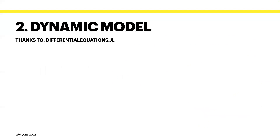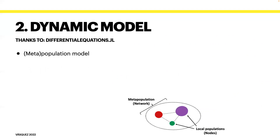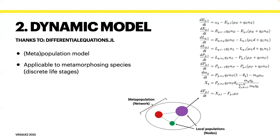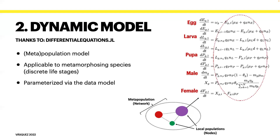Moving on to the second part of the framework, the dynamic model: this piece is a mathematical representation of continuous-time population dynamics using ODEs. It's a metapopulation model, meaning it can accommodate multiple discrete populations connected via bidirectional migration. The equations of the dynamic model are applicable across metamorphosing species. There are stage structures such that all organisms within a particular life stage are assumed equal with respect to their birth, death, and maturation rates, and those organism characteristics are specified by the values populating the data model. This approach to parameterization is an important aspect of the empirically informed logic governing GeneDrive.jl's design. The data model establishes an experimental record of the parameters used to initialize a simulation, and these values can then be perturbed in a reproducible way.